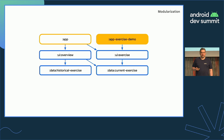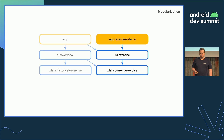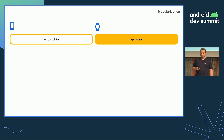One benefit to this kind of structure is that you can use underlying modules as building blocks to create entirely new apps. We added a new module — exercise demo — which can demo just the exercise screen in isolation while everything else already existed. The result is the ability to build apps without having to duplicate code unnecessarily, and crucially, only contain the code that you need. For Wear, we recommend the exact same approach: only add the code that you need.